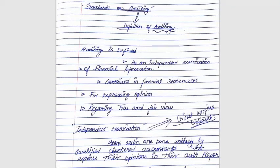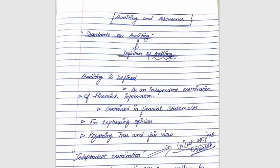This lecture has covered the definition of auditing — who the maker is, who prepares and who checks the financial statements, why they must be different people, what independent examination and professional skepticism mean, what financial information and financial statements include, what kinds of opinions can be made, and what true and fair view means. I hope this video has helped you all. Thank you so much — signing off!